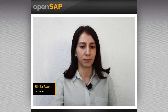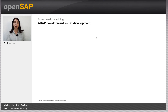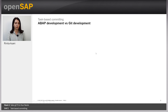My name is Rinita Asani and I am a developer at SAP. Before defining what task-based committing is and why it is important, let's make a comparison between development in ABAP World versus development in Git World. In ABAP World, developers use transactions like SE24, or ADT – ABAP Development Tools in Eclipse – to change and create Workbench objects, or SPRO for customizing objects, and SE09 to release tasks and transport requests.